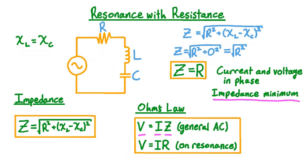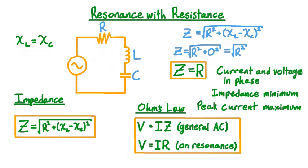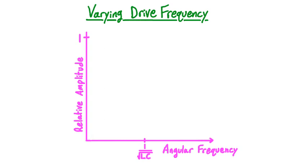Now let's see what happens when we drive the circuit at frequencies other than the resonant frequency. We'll use a graph with angular frequency on the horizontal axis and relative amplitude of the current on the vertical axis. The relative amplitude at a particular frequency is found by dividing the peak current at that frequency by the peak current at the resonant frequency, so by definition the relative amplitude at the resonant frequency is 1. Using relative instead of absolute amplitude allows this discussion to be very general, applying to a wide variety of resonant phenomena.